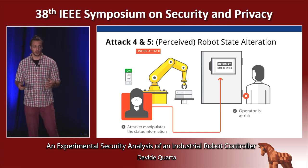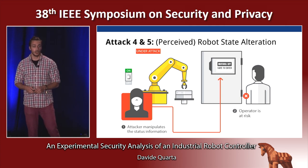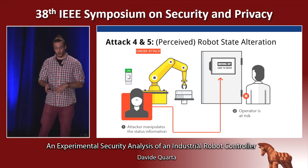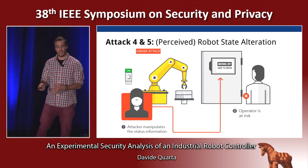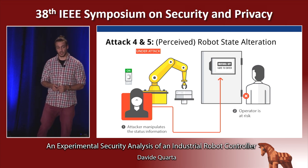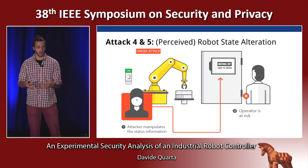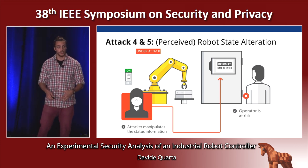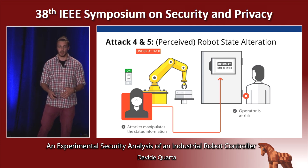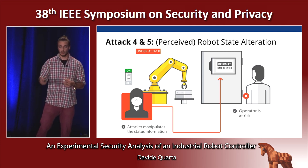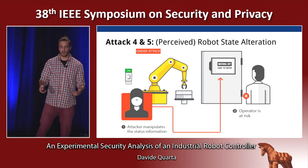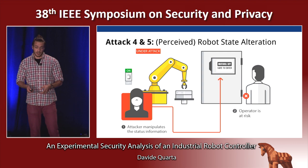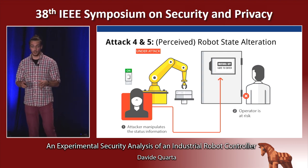The last attacks involve changing the state of the robot. The attacker can change the motors from off to on state, or make it move faster than usual. More dangerously, the attacker can change the state as perceived by the user. The teach pendant reports the robot's status — whether it is in manual or automatic mode. The attacker can report to the user that it is in manual mode when it is actually in automatic mode and running at full speed.